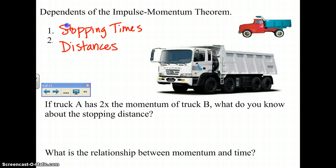Think about this. If truck A has twice the momentum of truck B — so momentum is two times greater for truck A than truck B — what do you know about the stopping distance? Think about what you've learned in the past two videos about momentum. If one object has twice the momentum as another, what do you know about the stopping distance of that object?